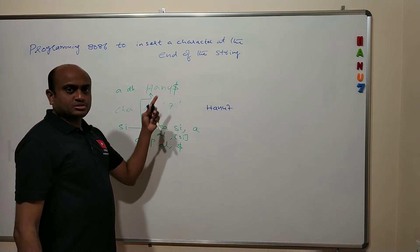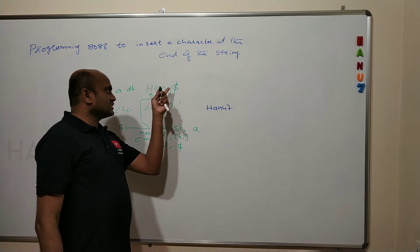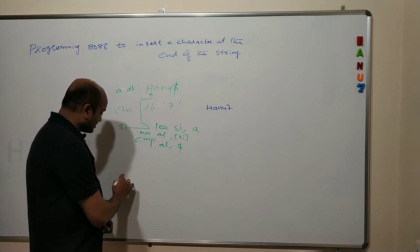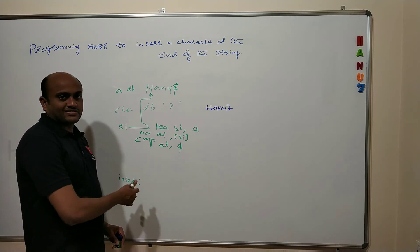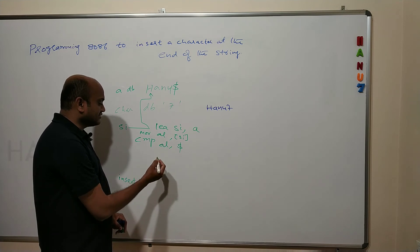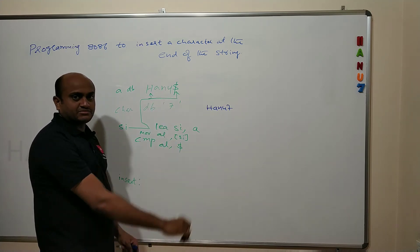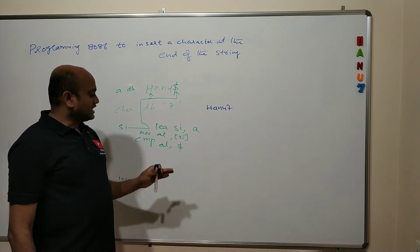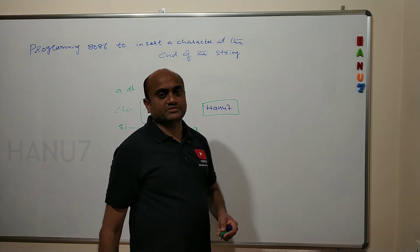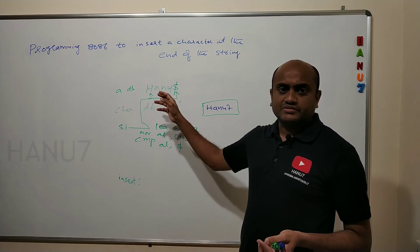If it is not matching, I increment SI. In the first iteration H won't match, then A won't match, then N won't match, then U won't match. Wherever the dollar is — which I placed at the end of the string — it will match. When it matches, the program jumps to a new label called 'insert'. At that insert label, it copies the new character into the memory location SI is currently pointing to — which is the dollar position — replacing it. So the desired output HANU7 becomes available.